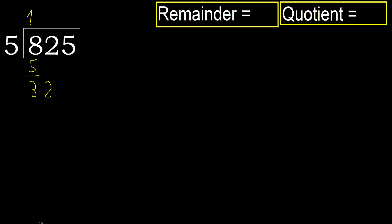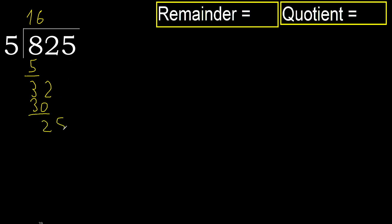5 multiplied by 7 is greater. 5 multiplied by 6 is 30, which is not greater. Ok. Subtract. Next.